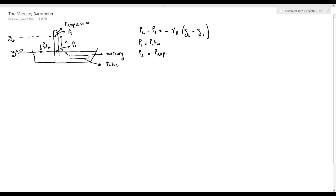Then the hydrostatic equation will reduce to 0 minus P atmosphere equals minus gamma times H. So H will be equal to P atmospheric over gamma mercury.